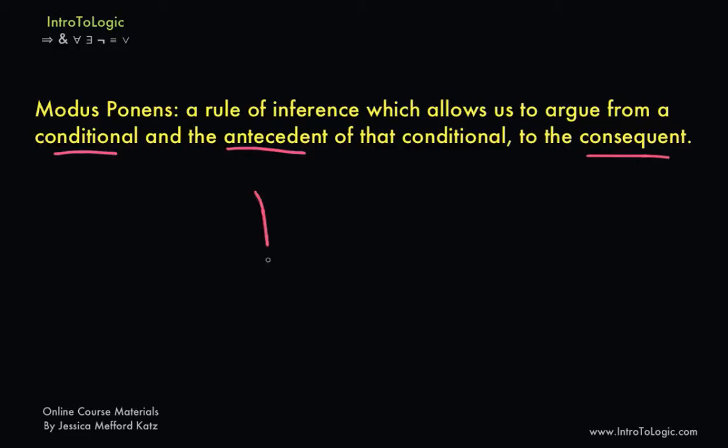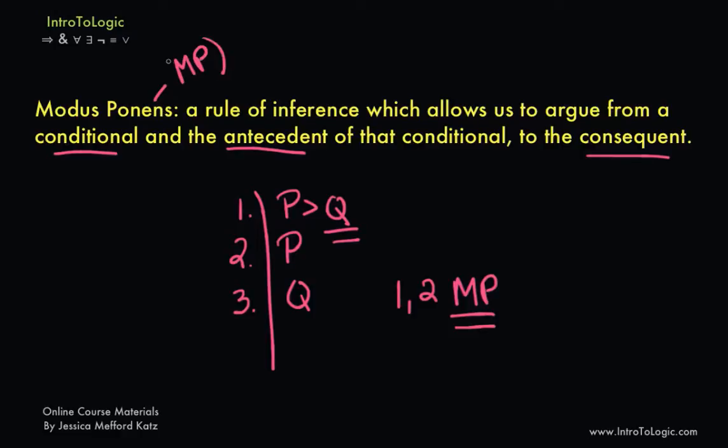So for example, if we have an argument where our first premise is if P then Q, and our second premise is P, modus ponens tells us that we can then derive Q from lines 1 and 2 or premises 1 and 2. So what we would do is write out which lines we use, which in this case is lines 1 and 2, and then we would represent the rule of inference modus ponens with the letters MP. Keep in mind that we'll be abbreviating modus ponens with an MP.